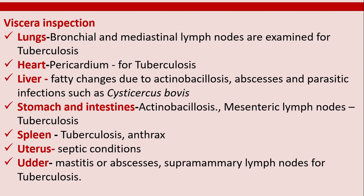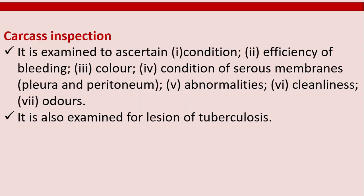The supra-mammary lymph nodes are examined for tuberculosis. In carcass inspection, the carcass is examined to ascertain condition, efficiency of bleeding, color, condition of serous membranes including pleura and peritoneum, abnormalities, cleanliness, and odors. It is also examined for lesions of tuberculosis.